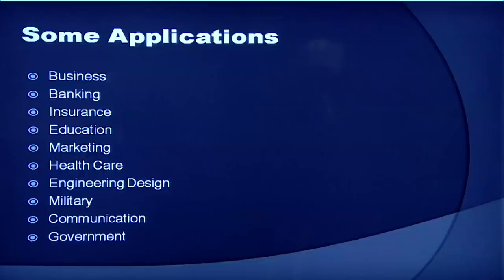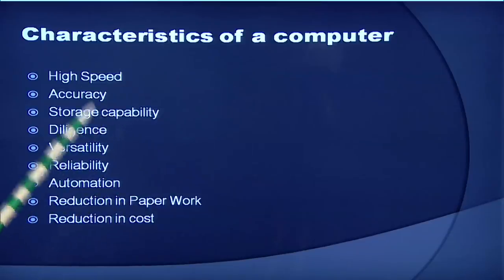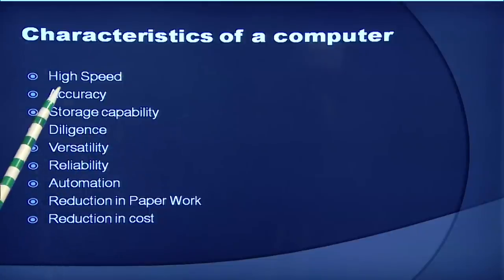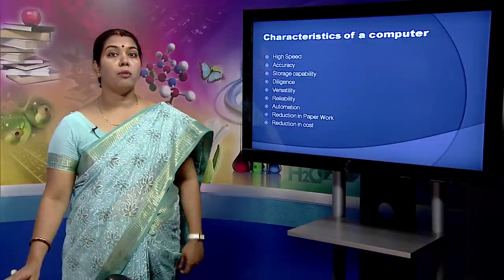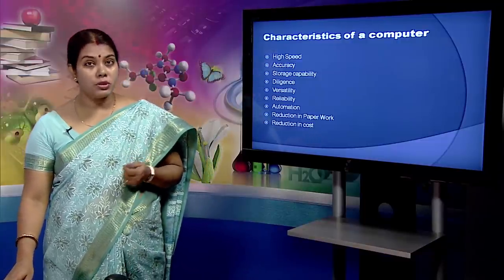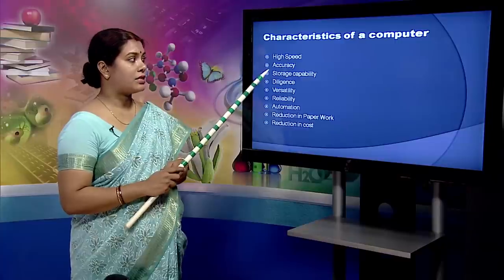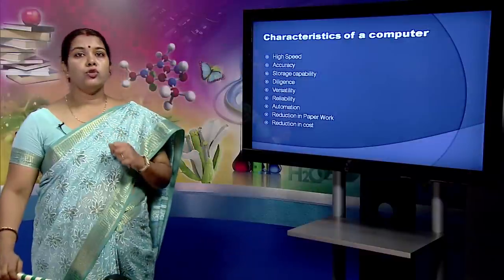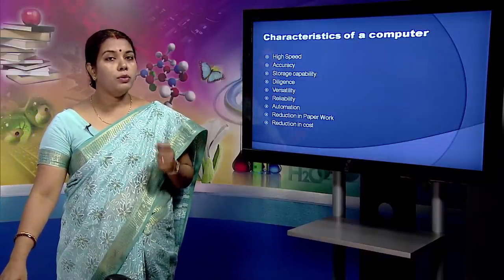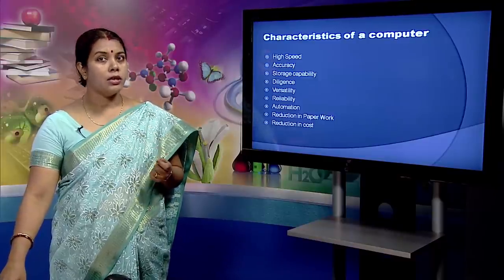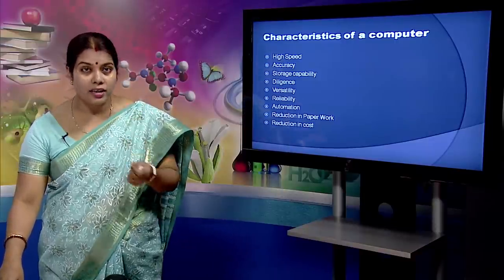The variety of applications suggests that computers have different characteristics, which is the reason we are able to use the computer in so many fields. The first characteristic is high speed. Computer is a very fast device, capable of performing calculations of very large amounts of data. The computer has units of speed in terms of microsecond, nanosecond and even picosecond. The next characteristic is accuracy. Computers are very accurate — calculations are nearly 100% error free, provided the user has given correct input and the correct logic.